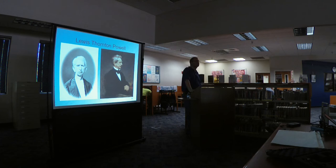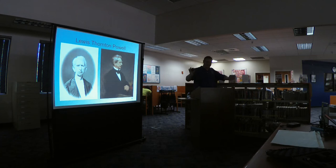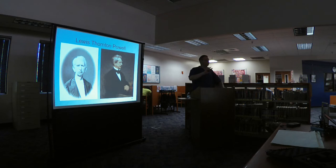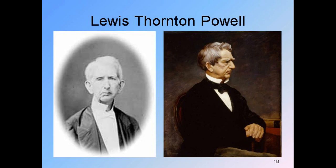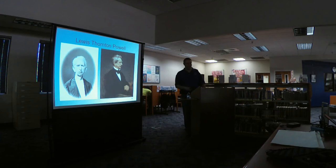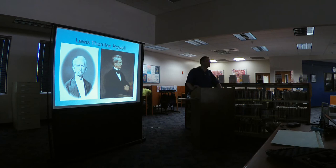When General Lee surrendered at Appomattox Courthouse in April 1865, the plan shifted from kidnapping to assassination — not just Lincoln, but also Vice President Andrew Johnson, Secretary of State William Seward, and possibly General Grant. Lewis Thornton Powell, now 21, was tasked with killing Secretary of State William Seward.